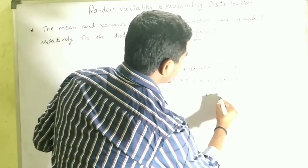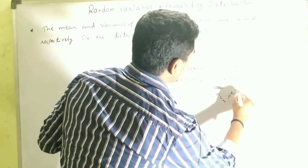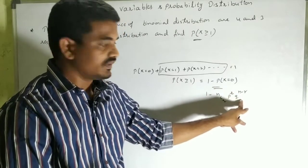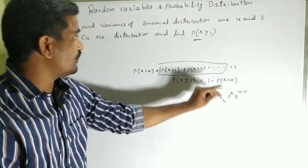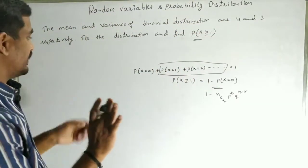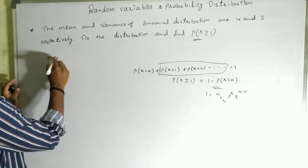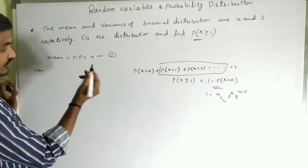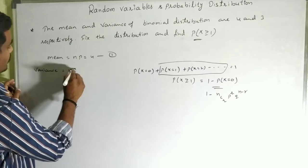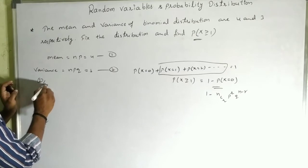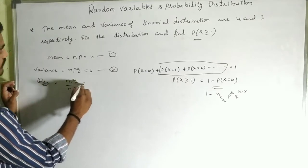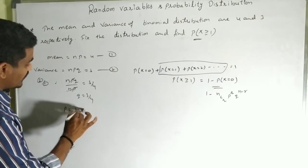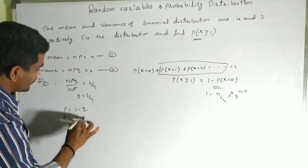The concept for finding P(X ≥ 1) uses P(E) + P(E') = 1, so P(X ≥ 1) = 1 − P(X = 0). Using the formula with r = 0: P(X = 0) = nC0 × p^0 × q^n. Now, from mean np = 4 (equation 1) and variance npq = 3 (equation 2), dividing gives q = 3/4 and p = 1 − 3/4 = 1/4.